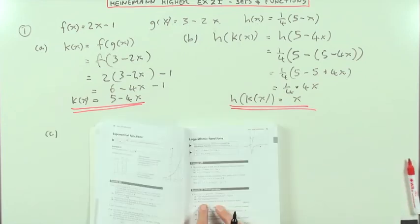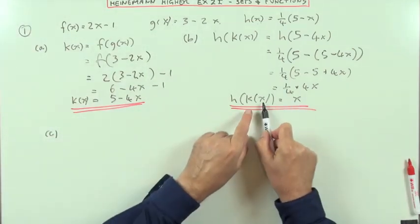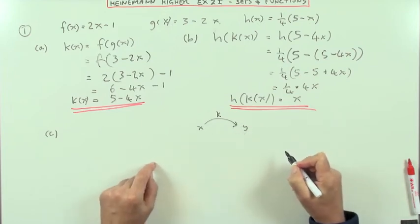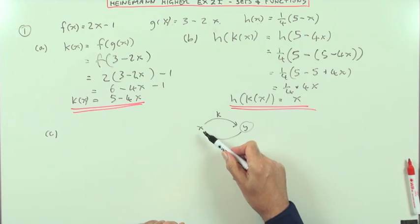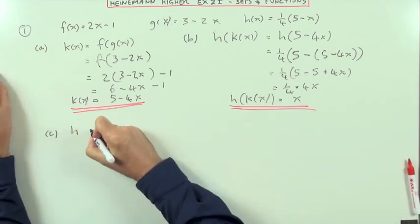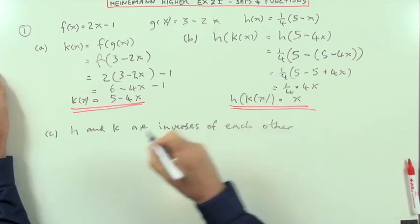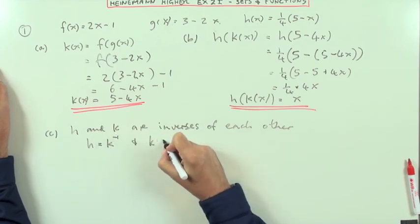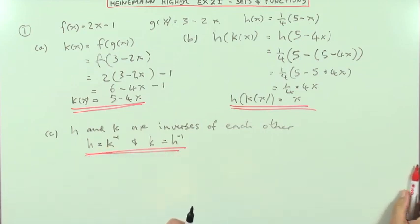And in fact, that's what the last question will ask. What is the connection between the functions h and k? Well, it's quite obvious here. You started with x, k acted on it and produced an answer, you could just call that y. And then h came along and acted on that answer and gave you back x again, which meant it was the inverse of it, because it took you back to the beginning. So there's two ways you could write this. H and k are inverses of each other. Or you could say h equals inverse of k and k equals the inverse of h. They're inverses of each other. They undo what the other did. There we go.